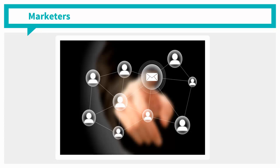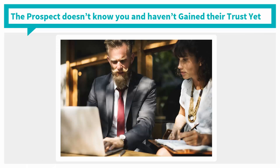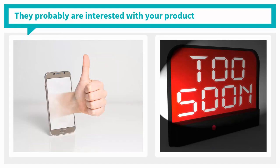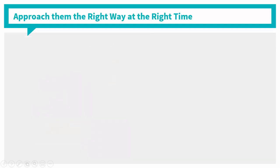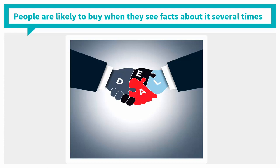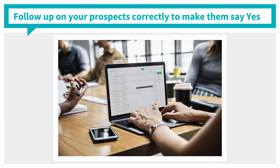There are times when marketers who have successfully made a connection with their LinkedIn prospects are too aggressive to make a sale. They give facts about the product and how it benefits the prospect, but the problem is the prospect doesn't know you and you haven't gained their trust yet. They might be interested but the timing is not right — they might not be looking to buy today, but soon they will. People are likely to buy when they keep receiving facts about a product several times, and they may still be researching reviews. So give them time. You have to follow up your prospects correctly to make them say yes.